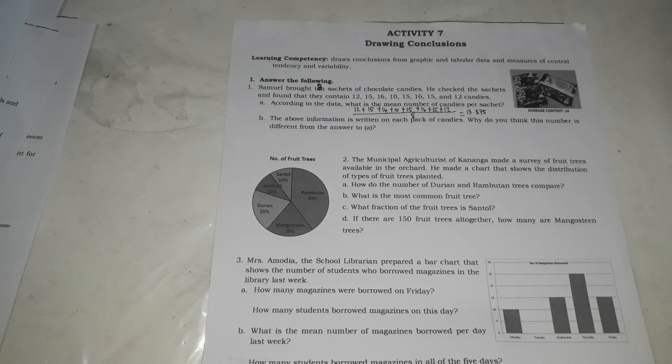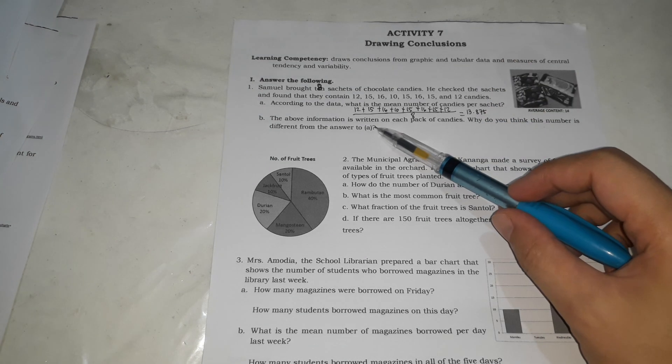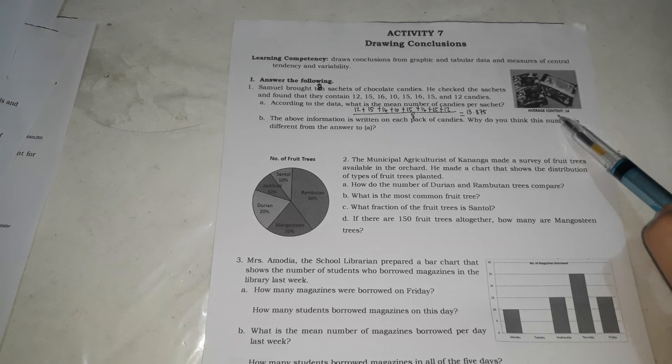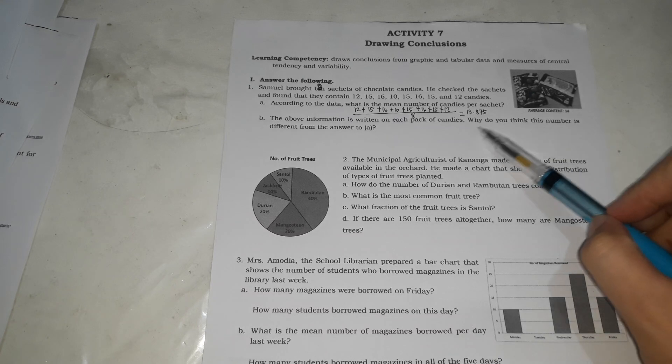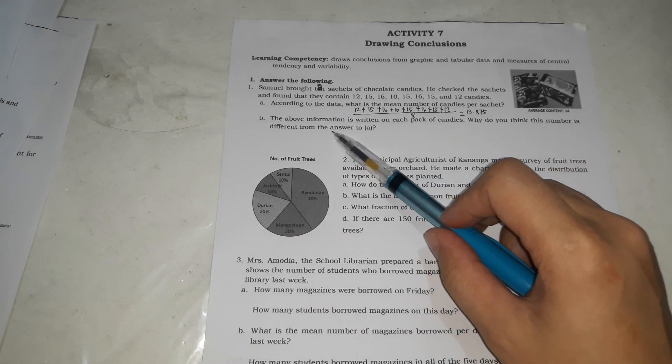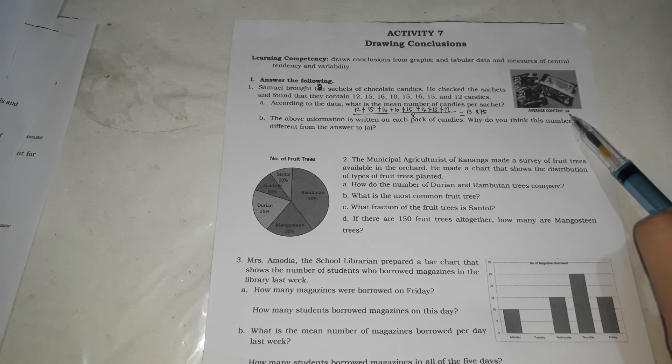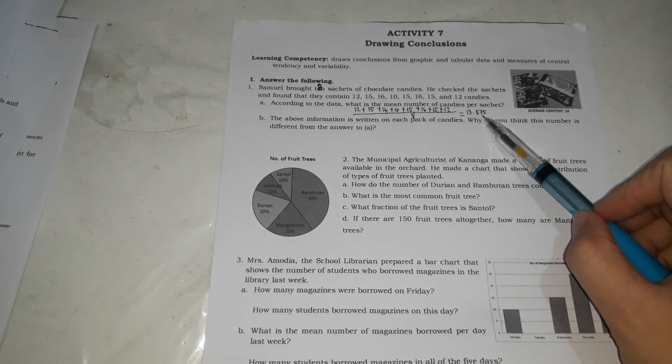That's the mean. But, the above information that's written on each pack of candies, the average content is 14. Why do you think this number is different from the answer to A? Why do you think it's different? 13.875, it's different with the average content which is 14.